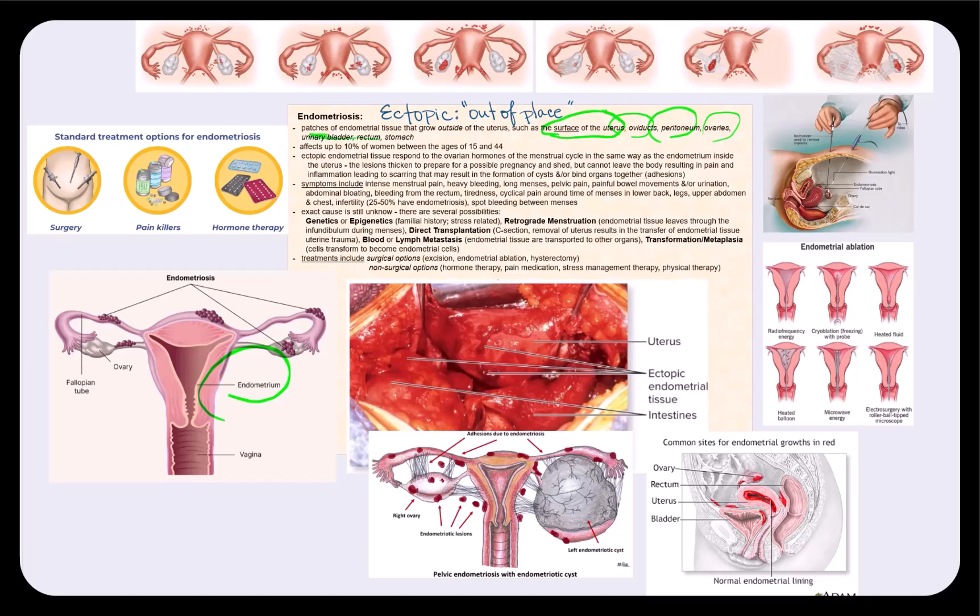the urinary bladder, rectum, and even the stomach, to name a few of where this ectopic endometrial tissue can grow. Roughly 10% of women between the ages of 15 and 44 are affected.